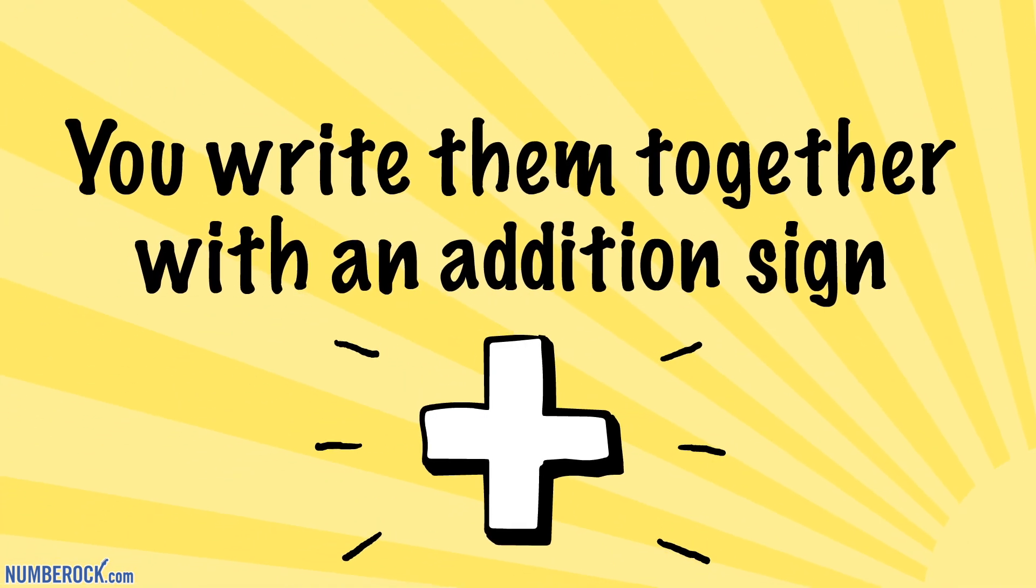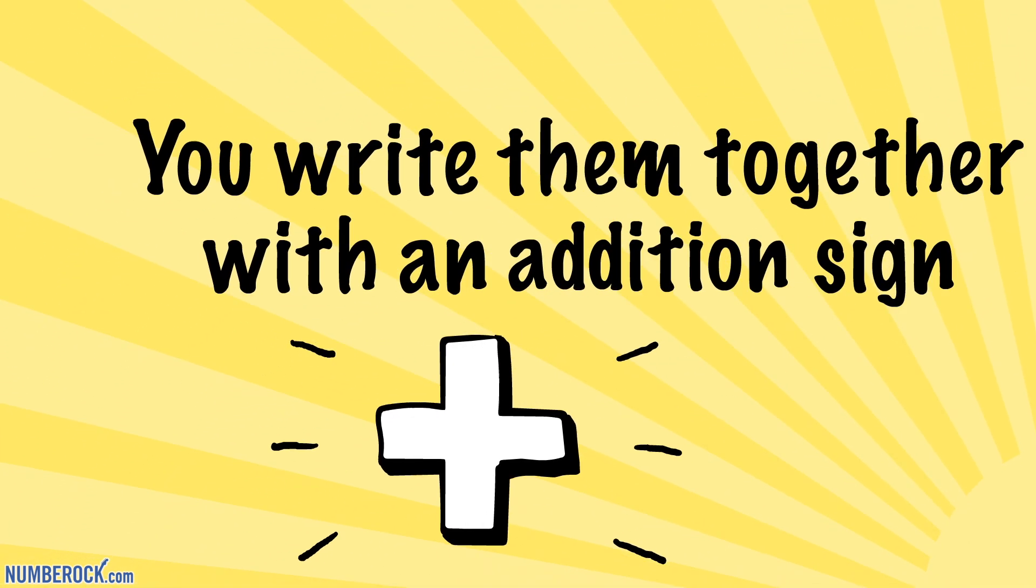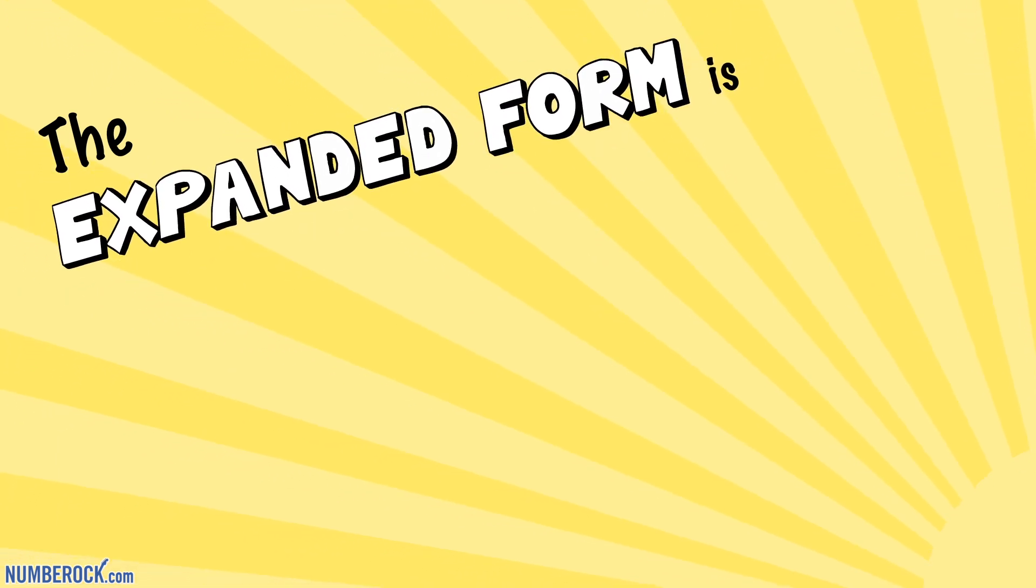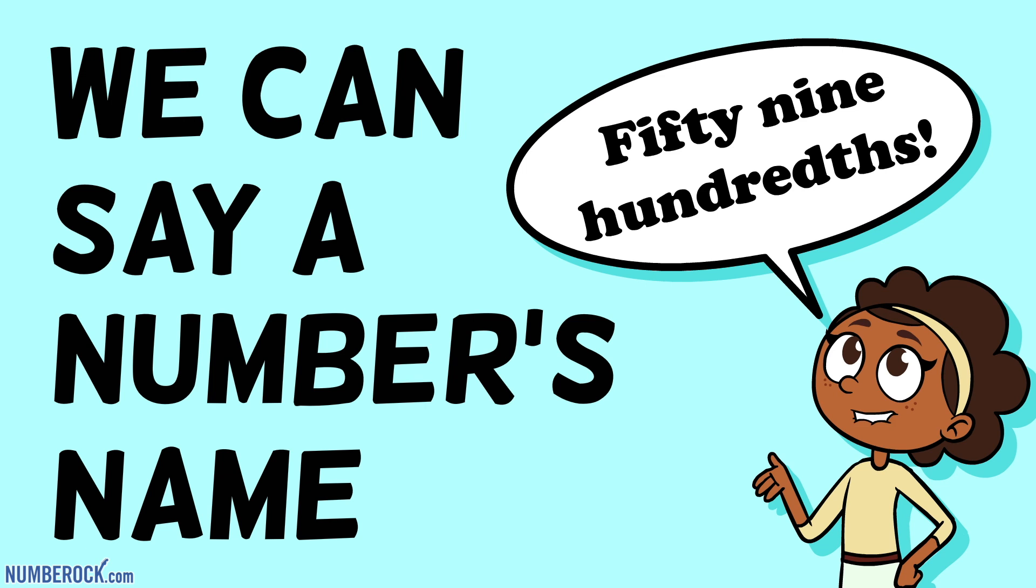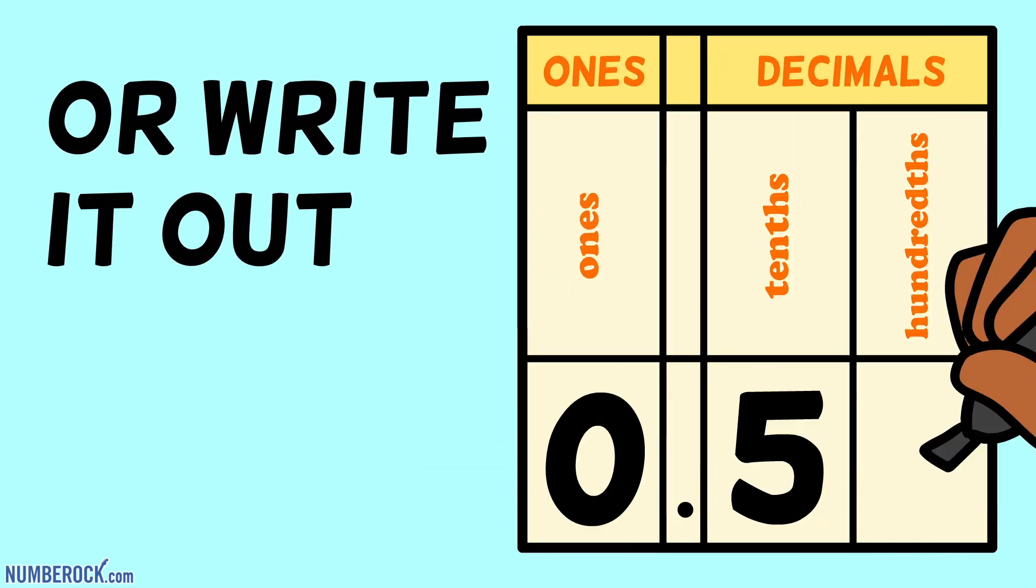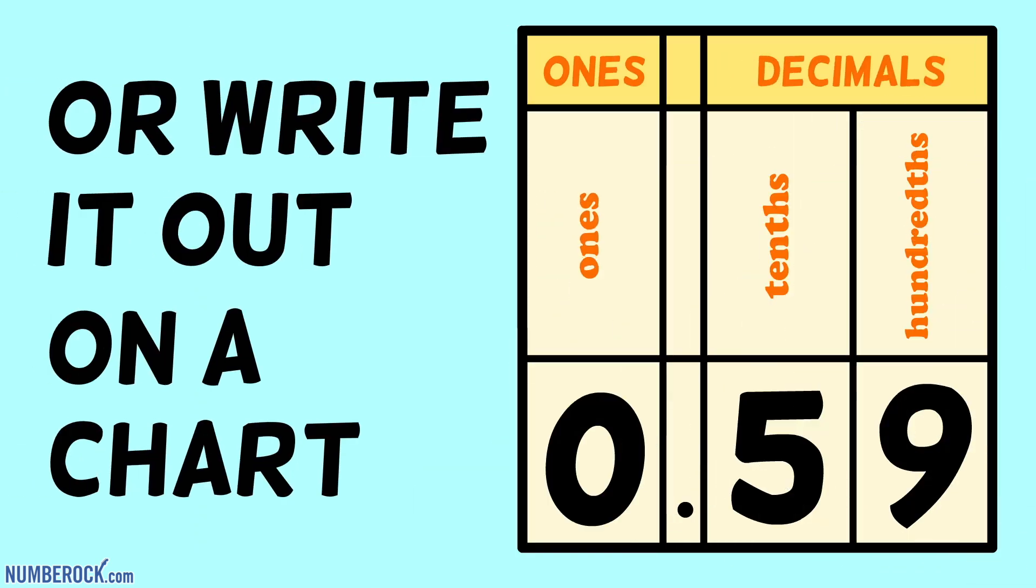You write them together with an addition sign. The expanded form is 0.5 plus 0.09. We can say a number's name or write it out on a chart.